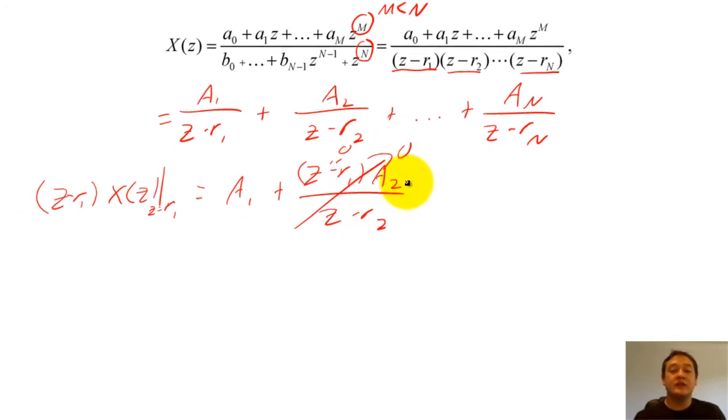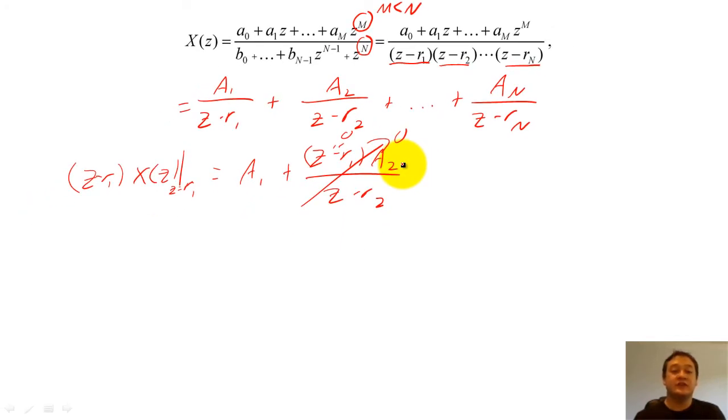Since we know that exponential sequences yield Z-transforms of this form, we can massage our big equation to take a similar form.